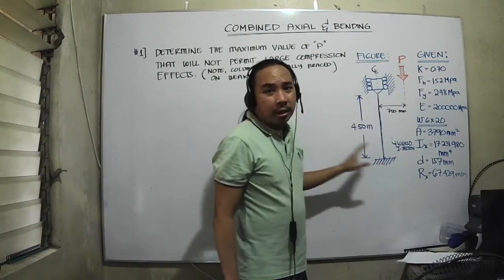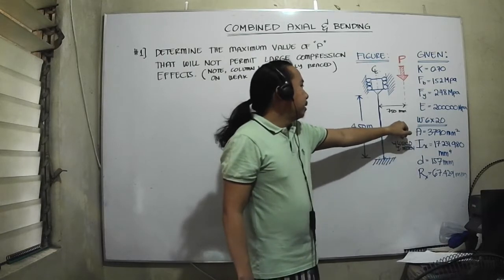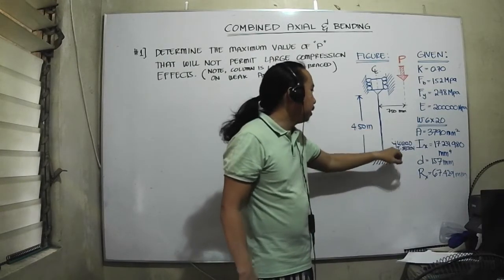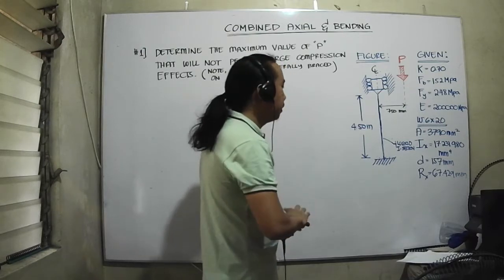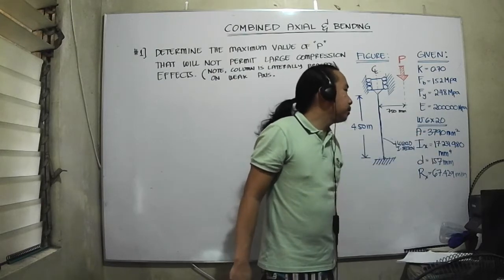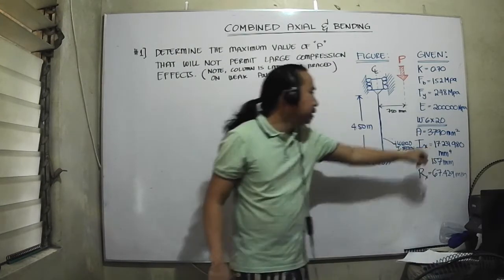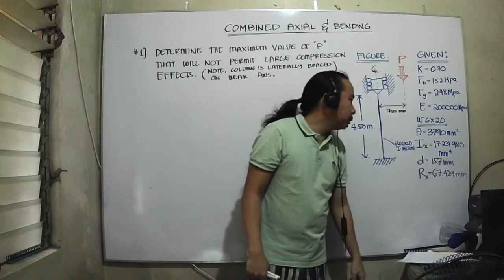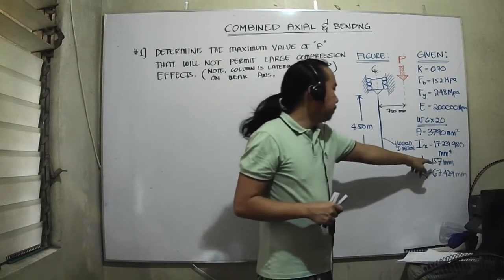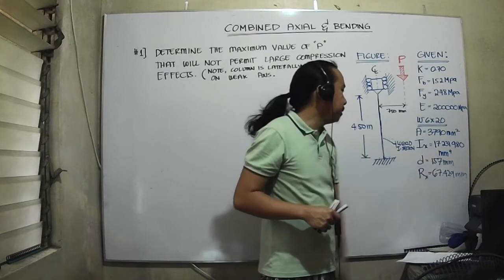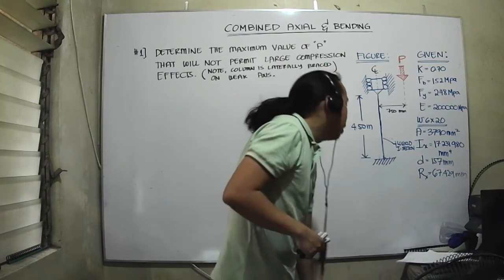I'm just reading through the given values so that everyone will be able to follow. The structural member — or rather, column — being used is a W6×20 I-section. This has a corresponding cross-sectional area of 3,790 square millimeters. The centroidal moment of inertia with respect to the x-axis, Ix, is 17,231,980 mm⁴. The depth D is 157 millimeters, and the radius of gyration with respect to the x-direction is 67.429 millimeters.